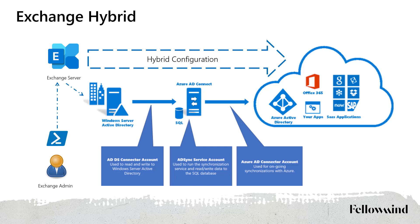To actually make some data available in the cloud, the first step is to synchronize accounts from Active Directory — meaning Active Directory Domain Services — to Azure Active Directory. We have to synchronize on-premise Active Directory to Azure Active Directory because Microsoft 365 and Office 365 do not know anything about on-premise technologies and cannot work directly with Active Directory Domain Services.